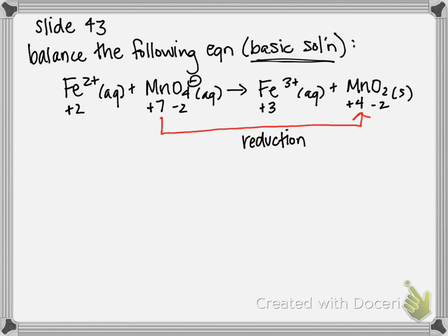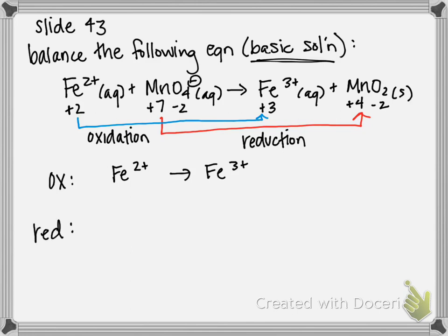For iron, we are going from plus 2 to plus 3. We are increasing our positive charge, getting more positive, therefore this is our oxidation. So now we can write our half reactions. Oxidation is just Fe²⁺ to Fe³⁺. And our reduction is MnO₄⁻ to MnO₂.